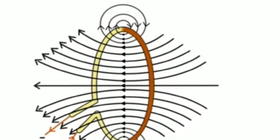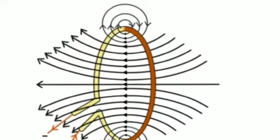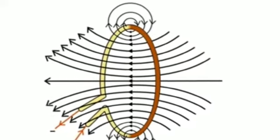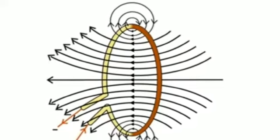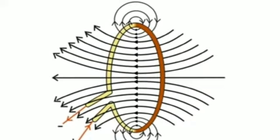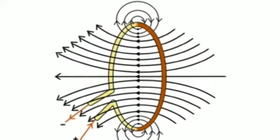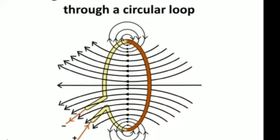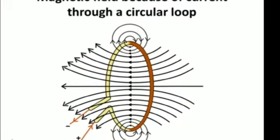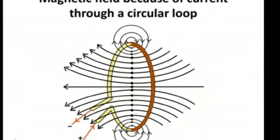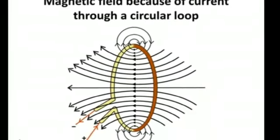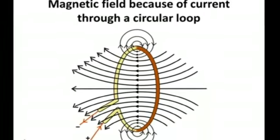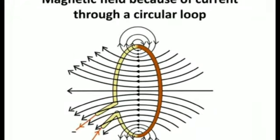At every point of a current carrying circular loop, the concentric circles representing the magnetic field around it would become larger and larger as we move away from the wire. By the time we reach the center of the circular loop, the arcs of these big circles would appear as straight lines.